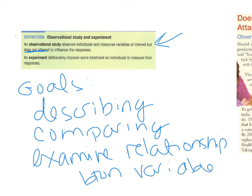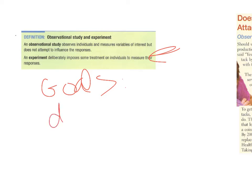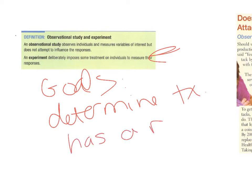That cause-and-effect question is left up to an experiment. An experiment deliberately imposes a treatment on individuals and then measures their responses. The goal of an experiment is to determine if the treatment causes a response — to see if the treatment has an actual impact — and that treatment is deliberately imposed on the subjects.